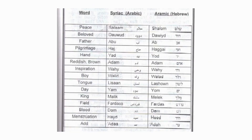This diagram is to show you that Arabic and Hebrew are the same. You got words such as peace — 'salam' and 'shalom'; Dawood and Daweed; Abu and Ab; Haj and Haggai; Had and Yad; Yod; Adam and Adam; Wahey and Wahey; Waleed and Walad. See, it's the same — it ain't no coincidence. Those words are that close.